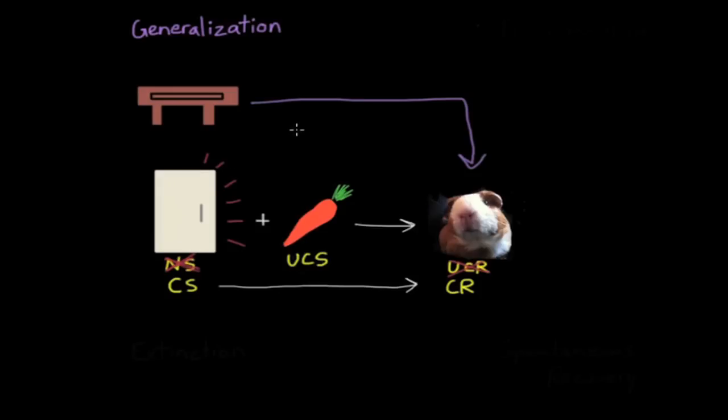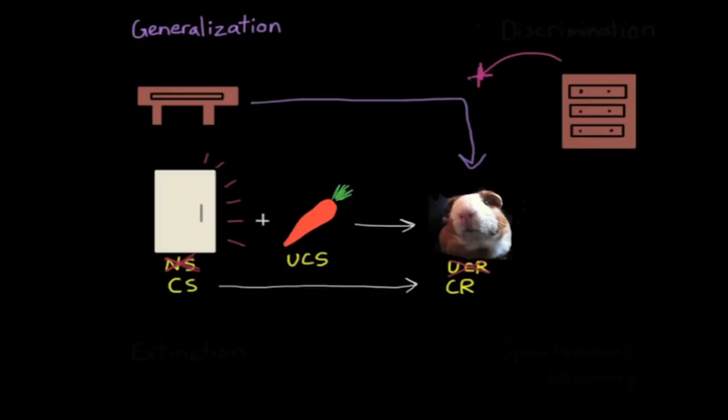Now, I don't want you to think everything is broken or stuck in my apartment. My dresser drawer actually opens just fine. It makes a sound, but it's more of a rumbling sound than a popping sound. And when I open my dresser drawer, my guinea pig does not respond to the sound by behaving excitedly. And the term for this is discrimination.